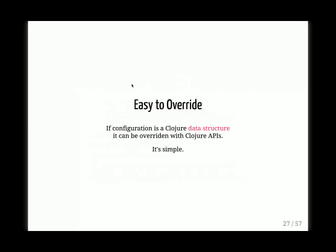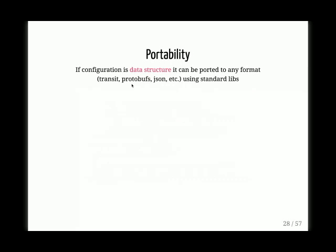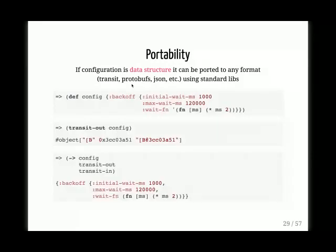Not adding a lot of DSL will allow you to open your data — your configuration — to a lot more people, tools, and validations. For example, if your configuration is just a Clojure data structure, it can be easily overwritten with Clojure APIs. I don't think you can argue with this because Clojure's collections API is great. It's also easily portable, because now you can use any tool that works with just data structures: Transit, Protobuf, JSON, MessagePack, anything — or any standard library. In this example, I use Transit to convert it to a byte stream, send it anywhere, and convert it back — and everything stays the same.